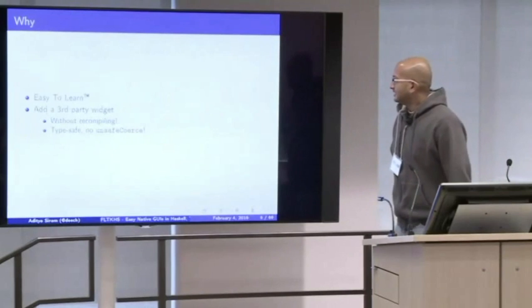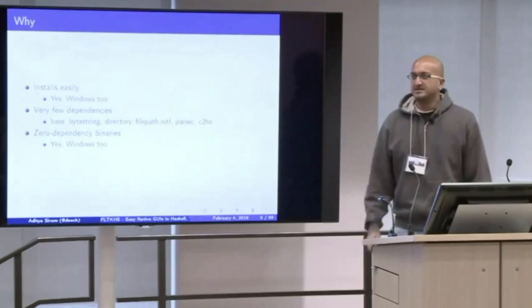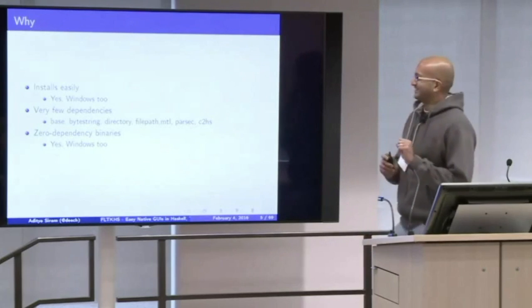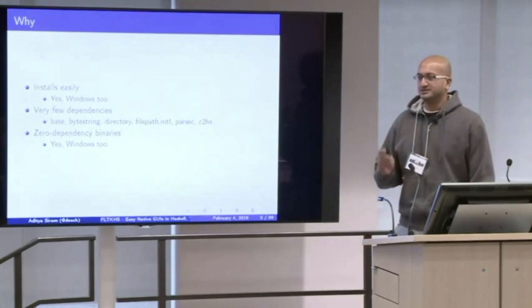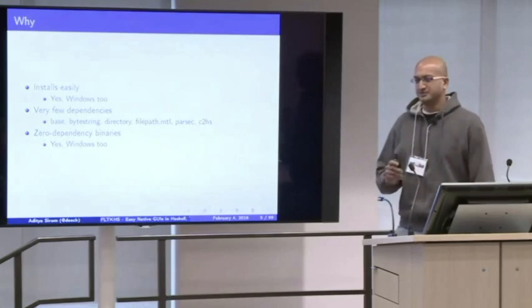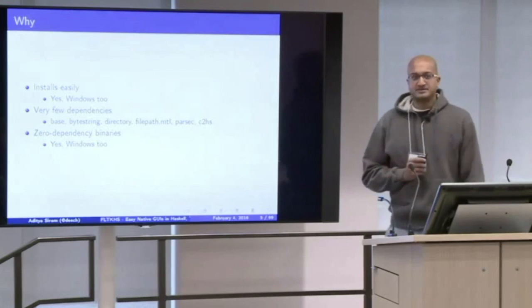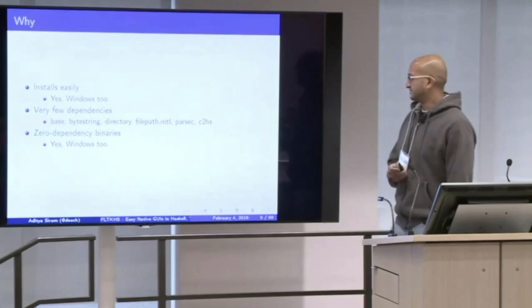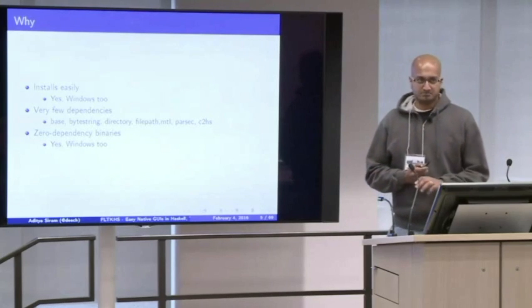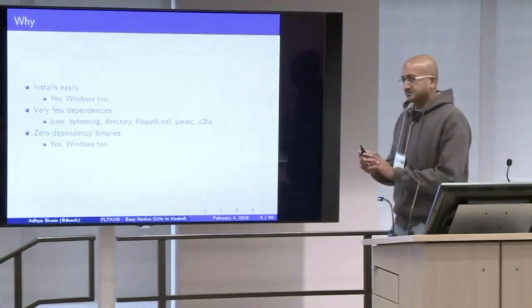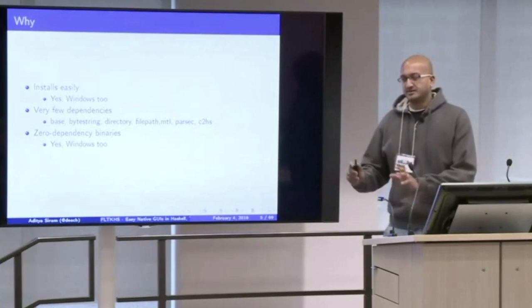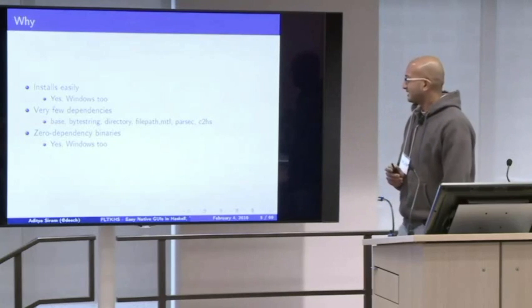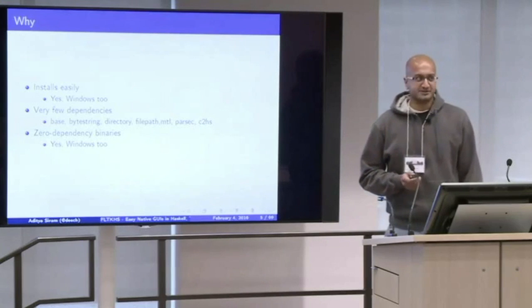So you can write native GUIs in pure Haskell. It's not pure, it's all in IO, but you're writing in Haskell. It installs easily, except for the fact that it blew up on a user's Mac yesterday, which I will also fix. I got a Mac in Cloud account last night. And it installs easily on Windows, and I do have positive proof of that. The contributor said, yes, it does work. It has very few dependencies. The library has seven dependencies, not including base. And those six - byte string, directory, file path, MTL, parsec, and C2HS - are standard Haskell libraries that install easily.